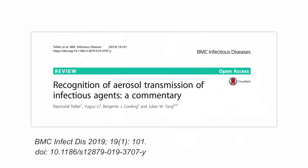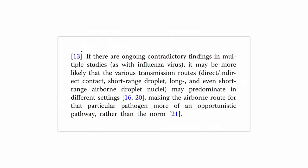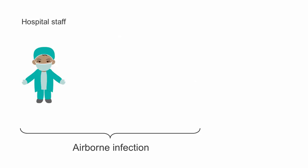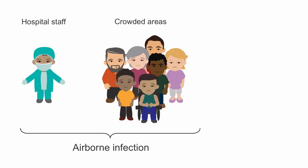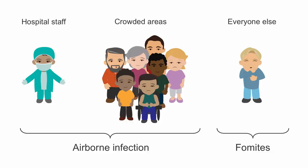One last statement from this paper: the authors say that given ongoing contradictory findings in multiple studies — as with influenza and potentially also SARS-CoV-2 — it may be more likely that various transmission routes predominate in different settings, making the airborne route more of an opportunistic pathway rather than the norm. This means the airborne route is probably mainly relevant for hospitals and hospital staff, as well as crowded and badly ventilated public spaces. Everyone else is probably more likely to get the virus through touching surfaces, poor hand hygiene, and touching their face.